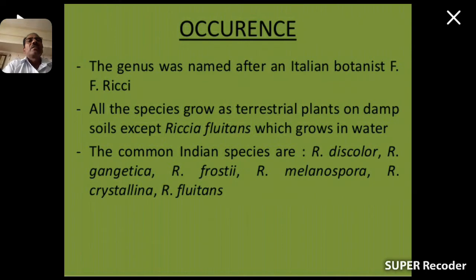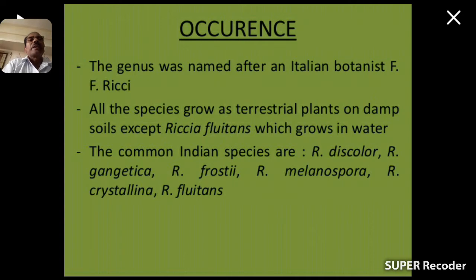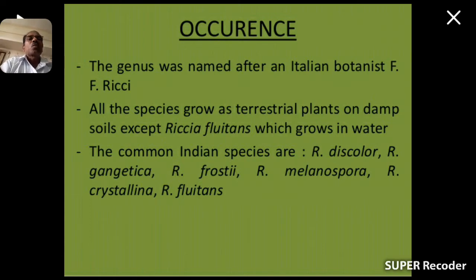Occurrence of Riccia. It occurs in the rainy season on moist surface of soils. The genus was named after an Italian botanist F.F. Ricci. All the species grow as terrestrial plants on damp soils, except Riccia fluitans, which grows in water. The common Indian species are Riccia discolor, Riccia gigantea, Riccia frostii, Riccia melanospora, Riccia crystallina, and Riccia fluitans.